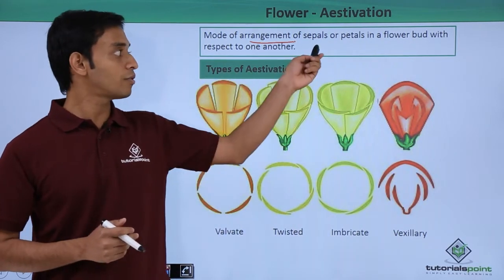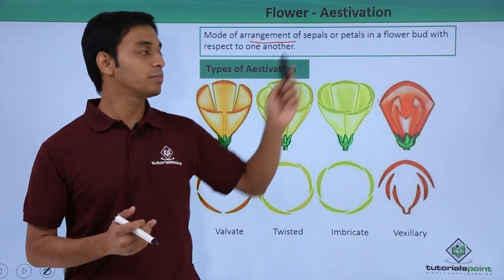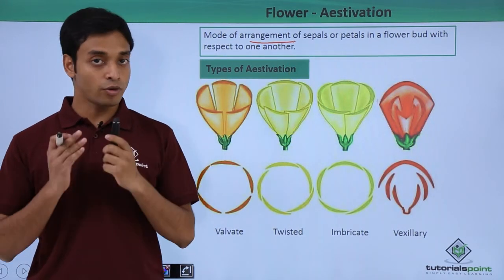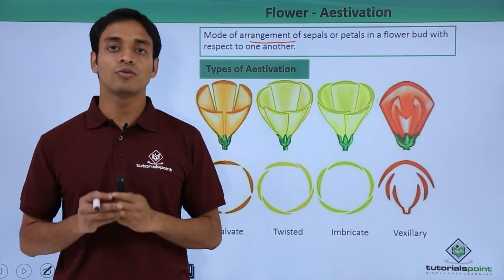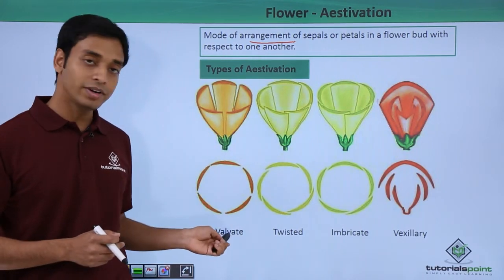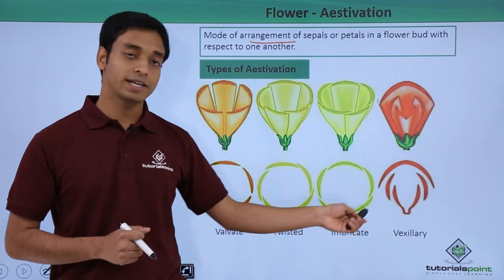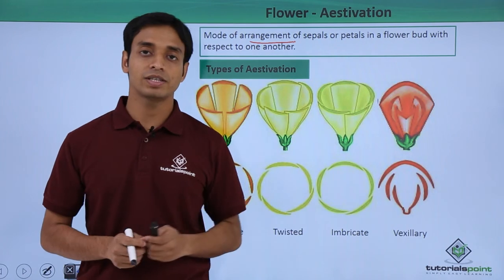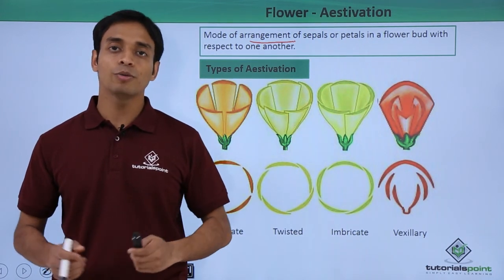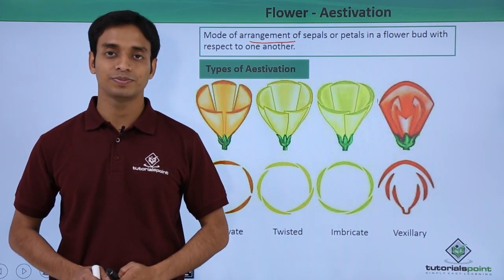In this video we have talked about the mode of arrangement of sepals or petals, known as aestivation, and discussed four types: valvate, twisted, imbricate, and vexillary. Thank you.